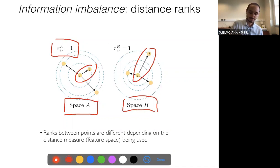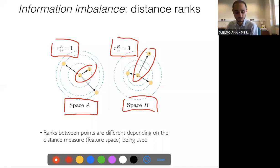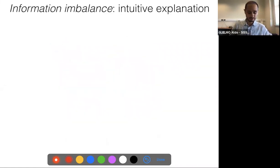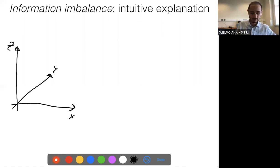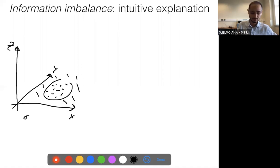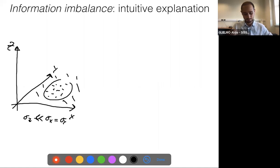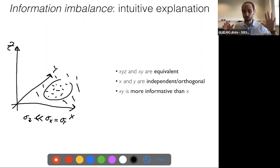The first thing used to compute the information imbalance is the notion of distance ranks. If you have a space and point j is the first neighbor of point i in this space, then the rank of j with respect to i is one. Importantly, the rank can differ depending on the space and the distance. In a different space B, the same two points might have a different distance rank — for example, the rank of j with respect to i could be three.